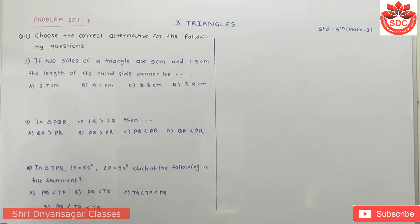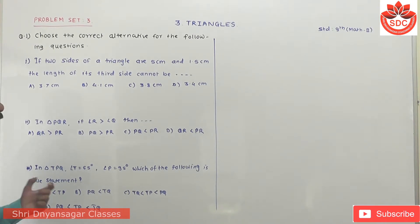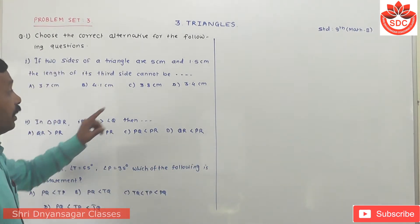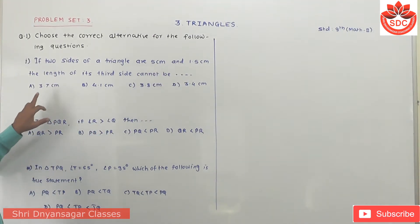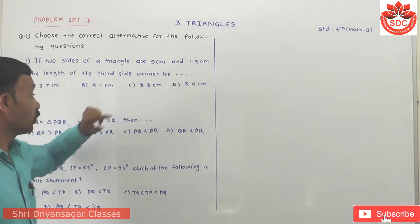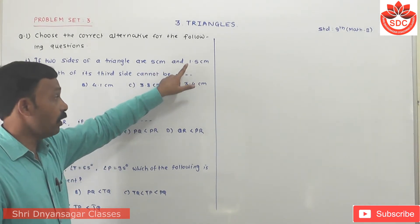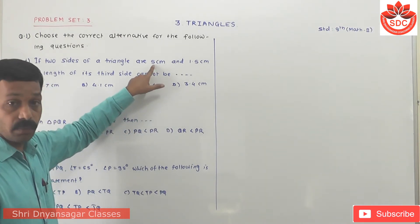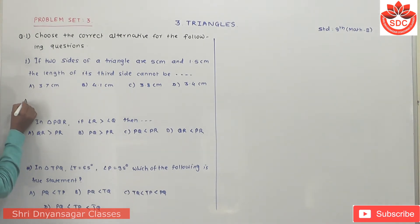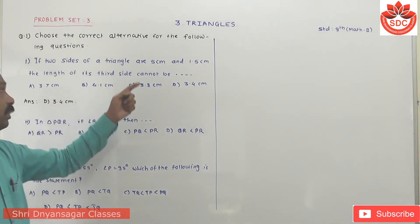First one: if two sides of a triangle are 5 cm and 1.5 cm, the length of its third side cannot be — you should know that the sum of any two sides of a triangle is always greater than the third side. Here 3.7 + 1.5 is greater than 5, 4.1 + 1.5 is also greater than 5, and 3.8 + 1.5 is also greater than 5. But 1.5 + 3.4 becomes 4.9, which is less than 5. So the sum of those two sides is less than 5. Therefore answer is D: 3.4 cm cannot be the third side.